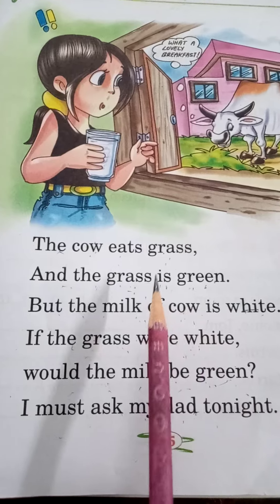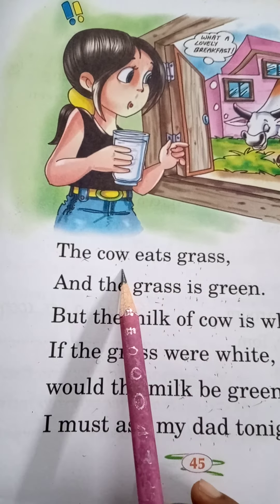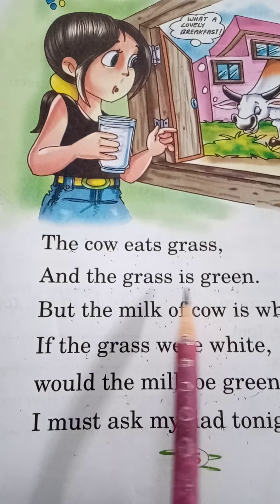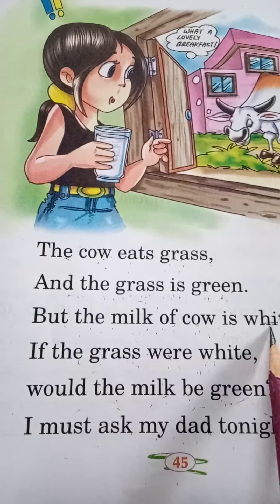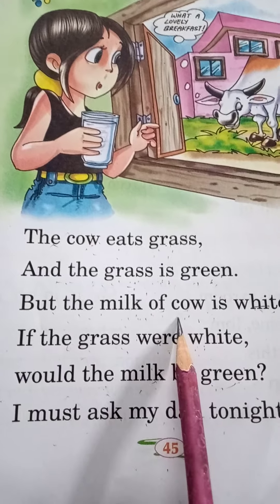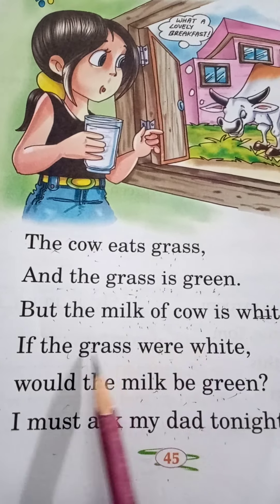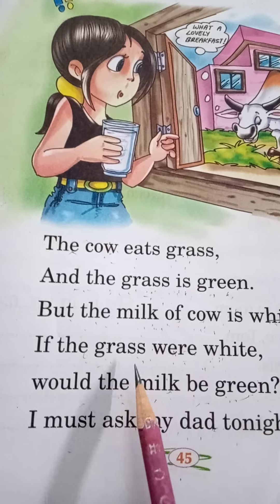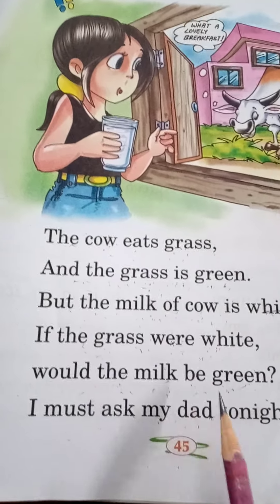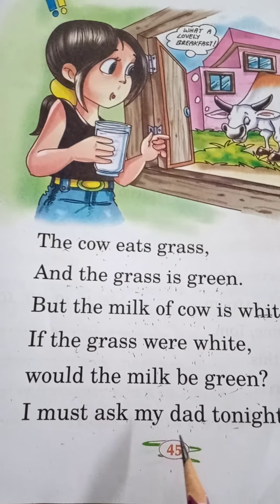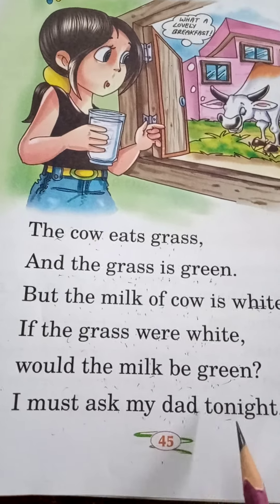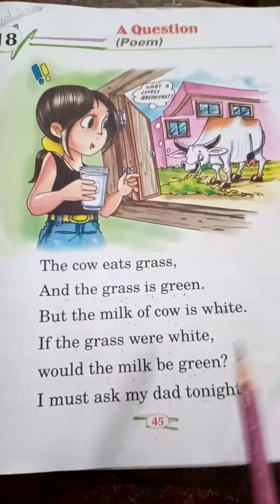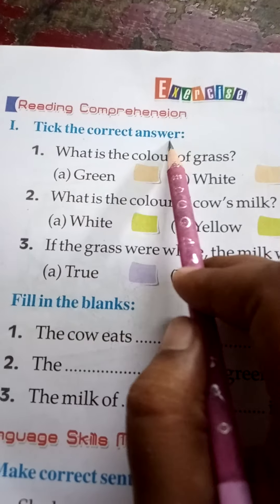Okay, let's understand everybody. Now again, repeat: the cow eats grass. Who eats grass? The cow eats grass and the grass is green. What is the color of grass? The grass is green. But the milk of cow is white. What is the color of milk? The milk is white. And who gives us milk? The cow gives us milk. We get milk from the cow. If the grass were white, would the milk be green? I must ask my dad tonight. Now follow the exercise — this is your homework.